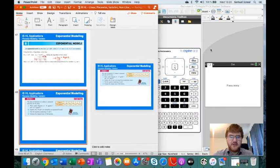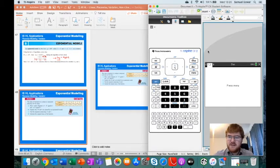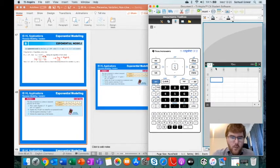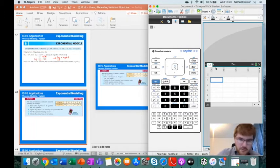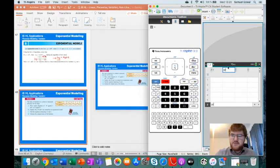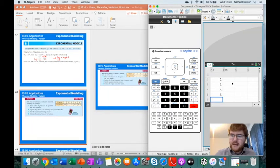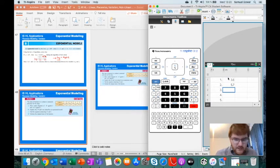Our first step is to put this into our GDC. We're going to open up Lists and Spreadsheets, label the two variables we have - in this case t and m - so we know which one is which. We're going to type the numbers in: 1, 2, 3, 4, 5 for t, and for m we've got 3.6, 5.7, 9.1, 14.6, and finally 23.3.